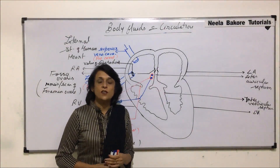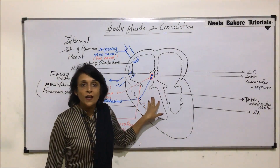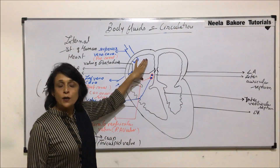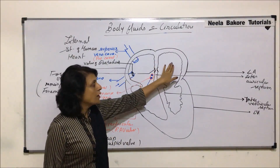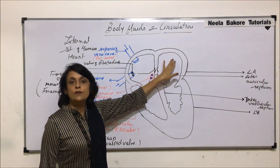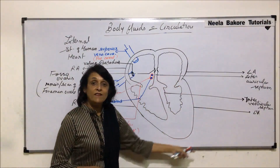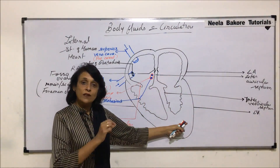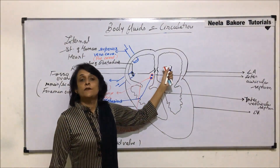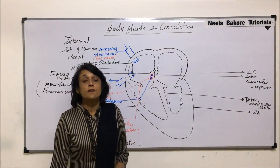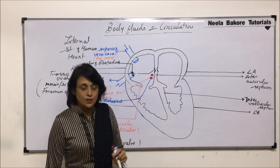Let us continue with the structure of the heart. What we have seen so far is the blood received in the right auricle. Now let us talk about the left auricle, how it receives blood, and then we'll come to the ventricle part. After we are done with everything, we will draw the outermost layer, that is the pericardium. This is the left atrium or left auricle, which is going to receive oxygenated blood from the lungs.